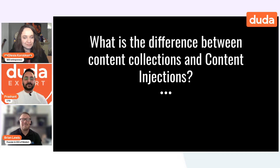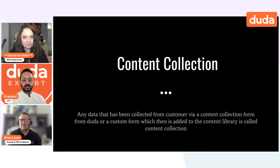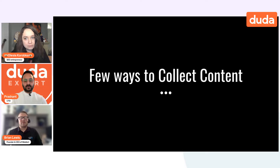Let's talk about content collections and content injection — what's the difference? Content collection is data you collect from your end user or lead, either via a content collection form that Duda already has, or via a custom form you create. You then push it to any websites you'd like via API. There are a few ways to collect content: Duda's native content collection form provides basic information like logo, business information, business details, and social account information. However, you can also create a custom form to collect those additional fields.